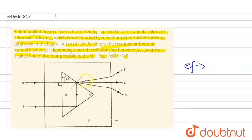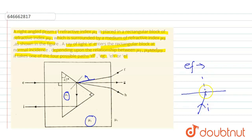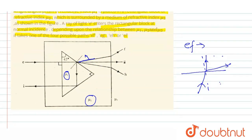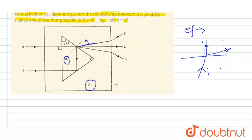For path EF, the ray tends to bend towards the normal at the first interface. When a light ray bends towards the normal, it is entering a denser medium. Hence I can say μ2 is greater than μ1 for this path EF.